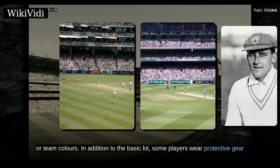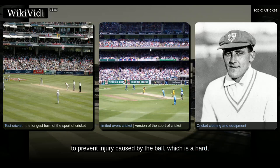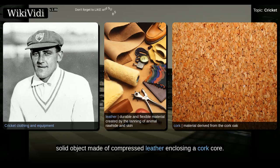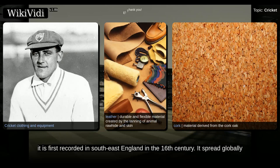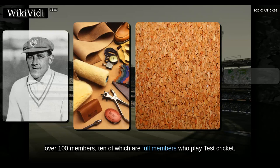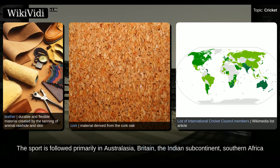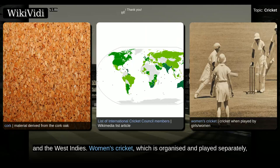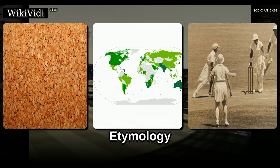There are various formats ranging from Twenty20, played over a few hours with each team having a single innings of 20 overs, to test cricket, played over five days with unlimited overs and the teams playing two innings apiece. Traditionally cricketers play in all-white kit, but in limited overs cricket, they wear club or team colors. In addition to the basic kit, some players wear protective gear to prevent injury caused by the ball, which is a hard, solid object made of compressed leather enclosing a cork core. Although cricket's origins are uncertain, it is first recorded in Southeast England in the 16th century. It spread globally with the expansion of the British Empire, leading to the first international matches in the mid-19th century. The ICC, the game's governing body, has over 100 members, ten of which are full members who play test cricket. The sport is followed primarily in Australasia, Britain, the Indian subcontinent, Southern Africa, and the West Indies. Women's cricket, which is organized and played separately, has also achieved international standard.